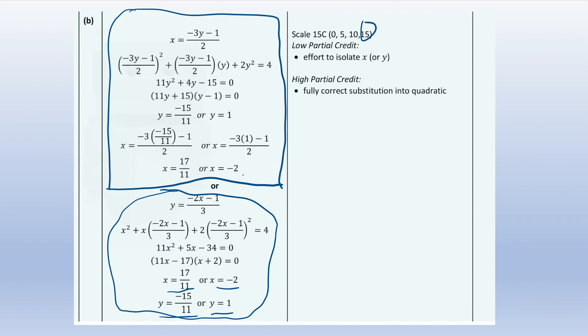Getting to the correctly substituted quadratic line earns you 10 marks. Even just knowing how to set up that substitution gets you two-thirds of the marks — a very handy 10 marks.